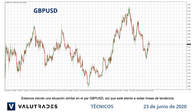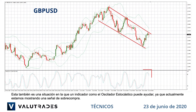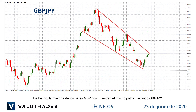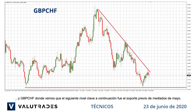We are seeing a similar situation on GBPUSD, so keep an eye on these trendlines. This is also a situation where an indicator like the Stochastic Oscillator can help, as we are currently showing an overbought signal. In fact, most GBP pairs are showing the same pattern including GBPJPY and GBPUSD, where we see that the next key level below was previous support from mid-May.